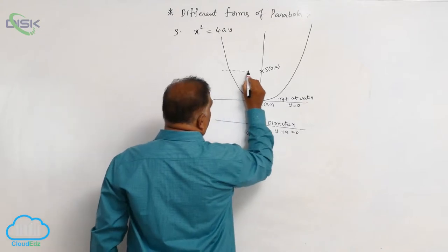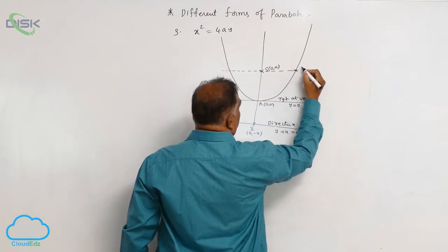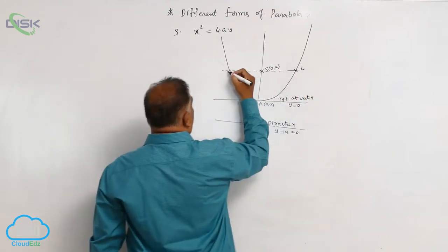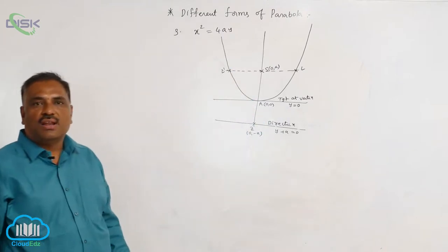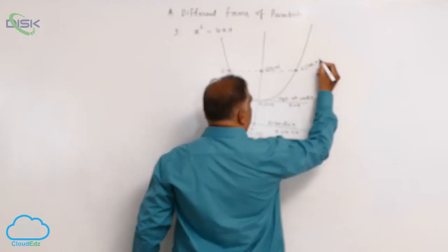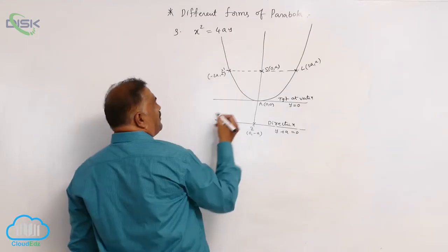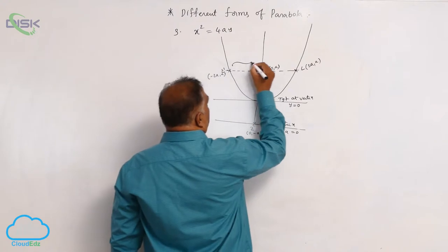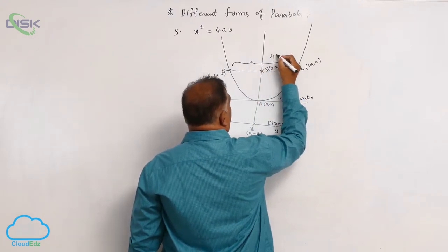Joining these points gives us L and L', which are the ends of the latus rectum. The ends are (2a, a) and (-2a, a), and the total length of the latus rectum is 4a.